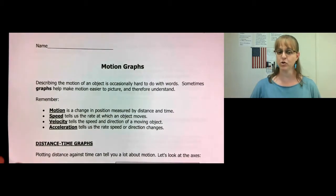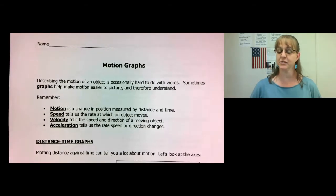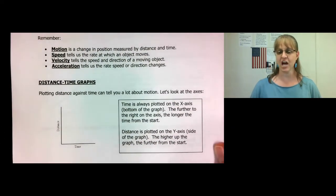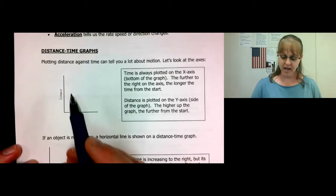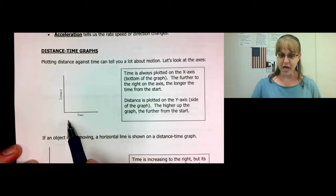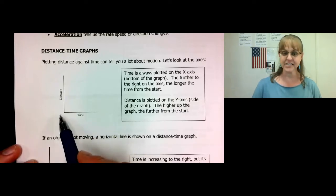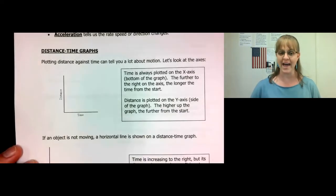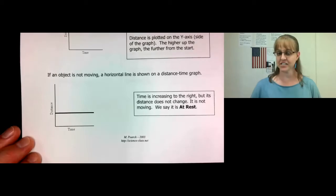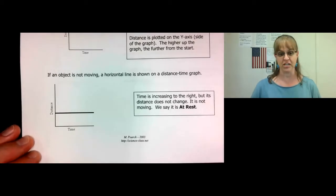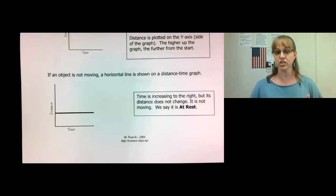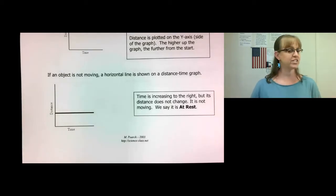Let's take a closer look at motion graphs, specifically distance-time graphs. On a distance-time graph, time is always plotted on the x-axis and distance is always on the y-axis. A distance-time graph is the same thing as a position-time graph. Your position is how far you are from the detector, which is also the distance from the detector.